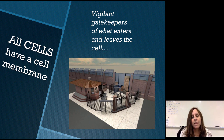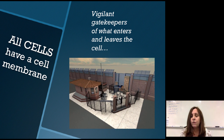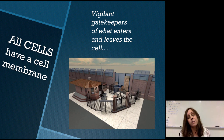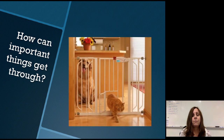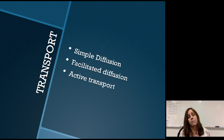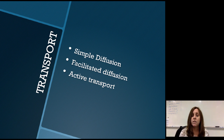All cells have a cell membrane. You have to have a cell membrane to be a cell, because that is your separation from your environment. The overall function of the cell membrane is to allow substances into the cell that need to come in, and allow substances out that need to come out, while not allowing things in or out that shouldn't be. There are three ways to get substances through a membrane: simple diffusion, facilitated diffusion, or active transport.